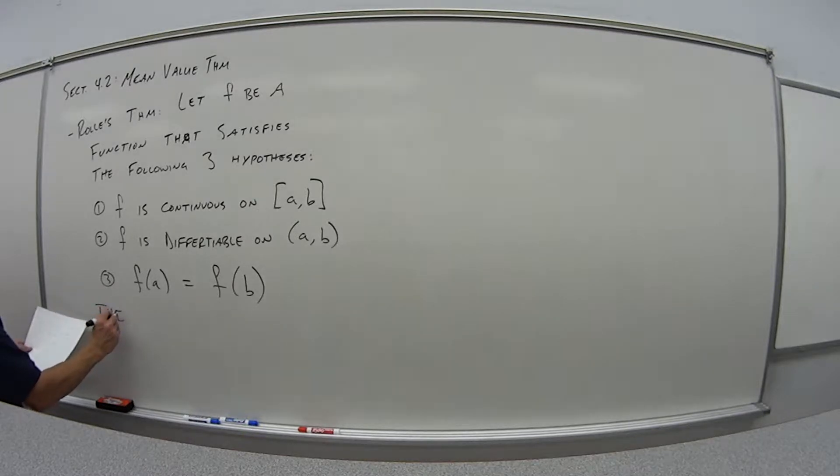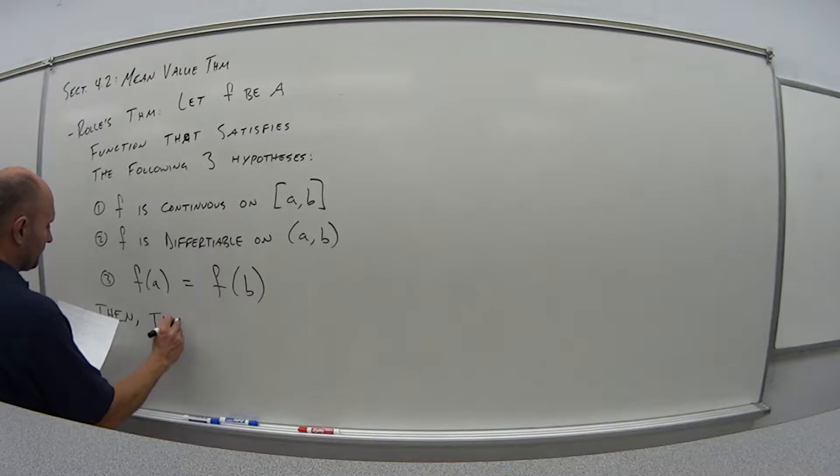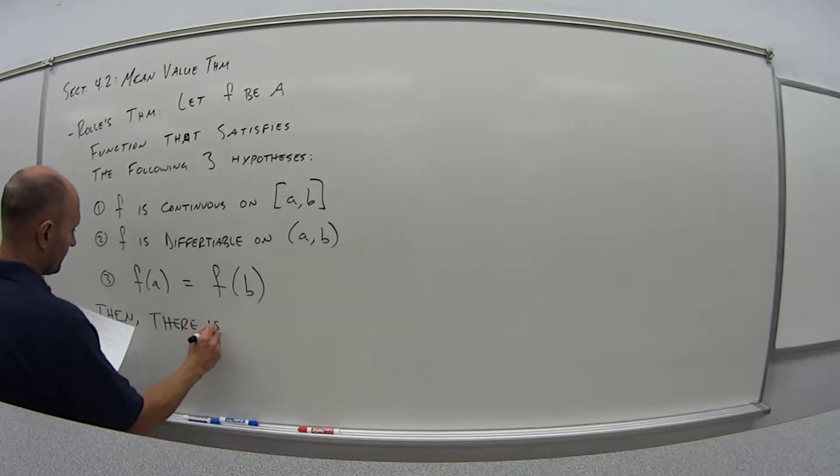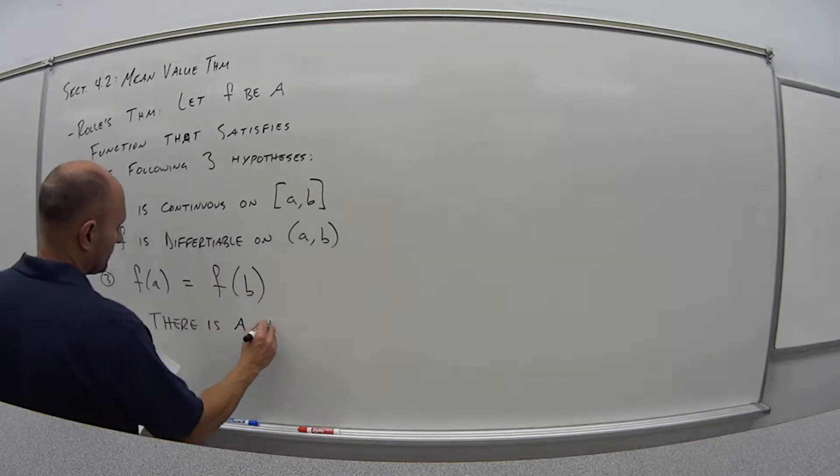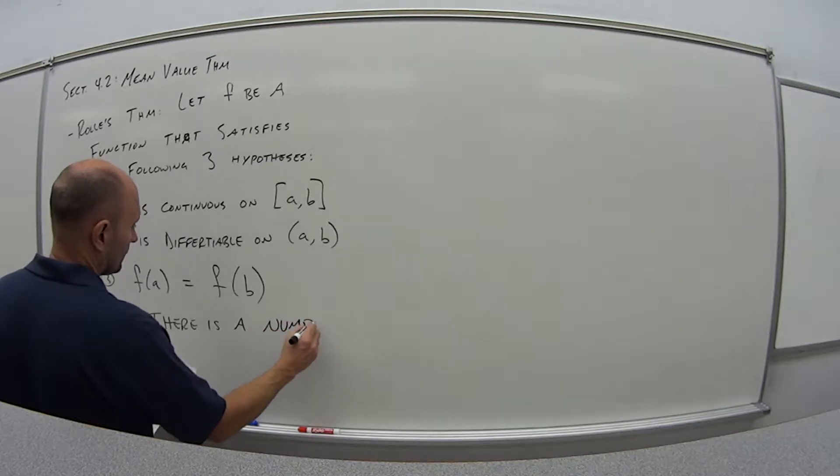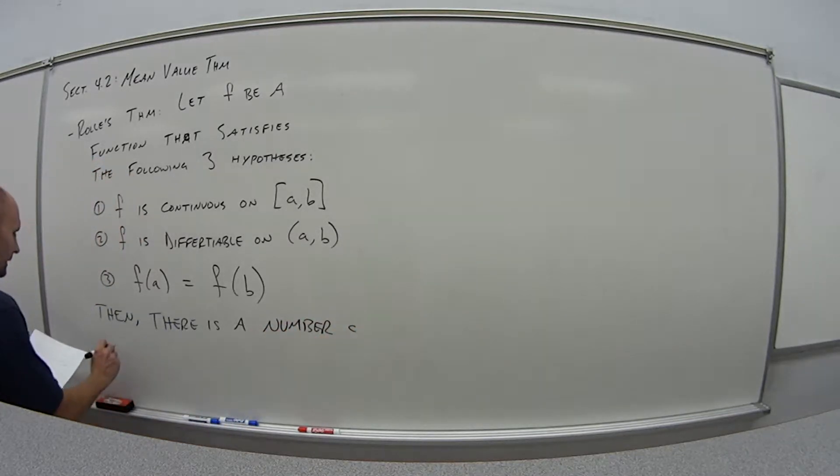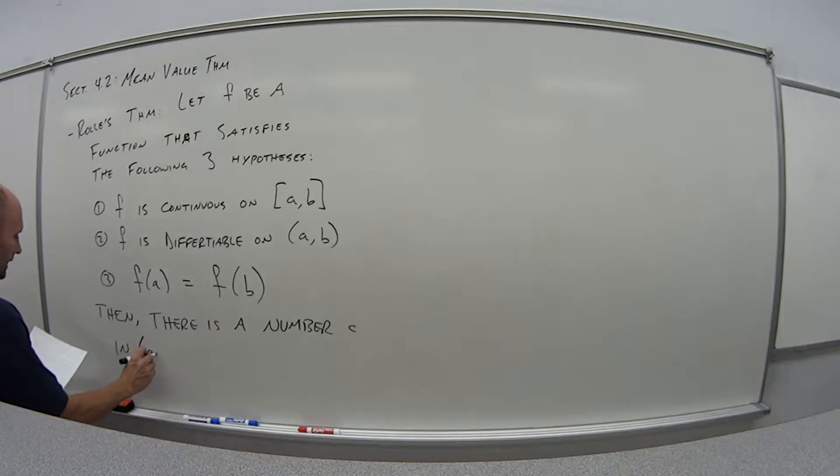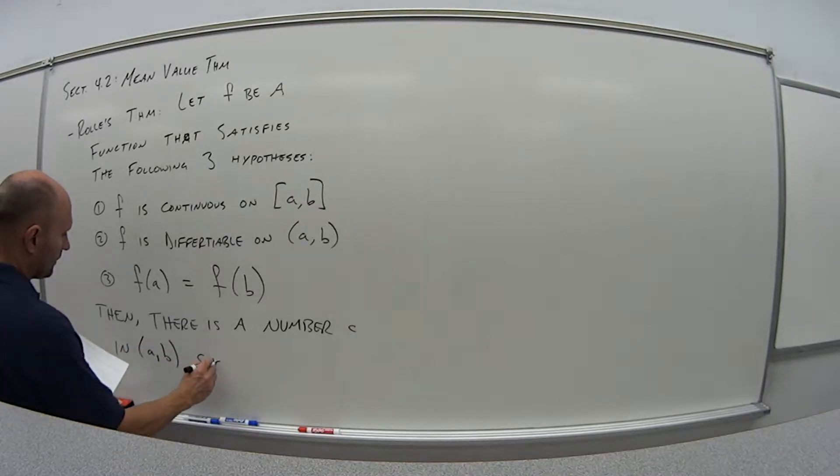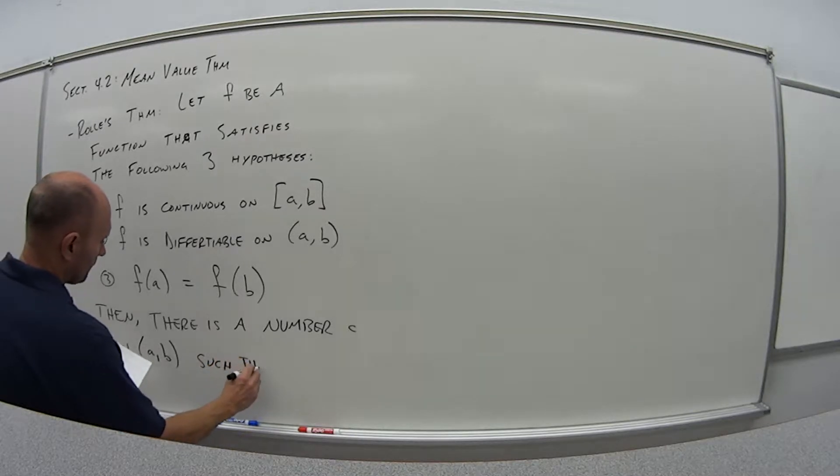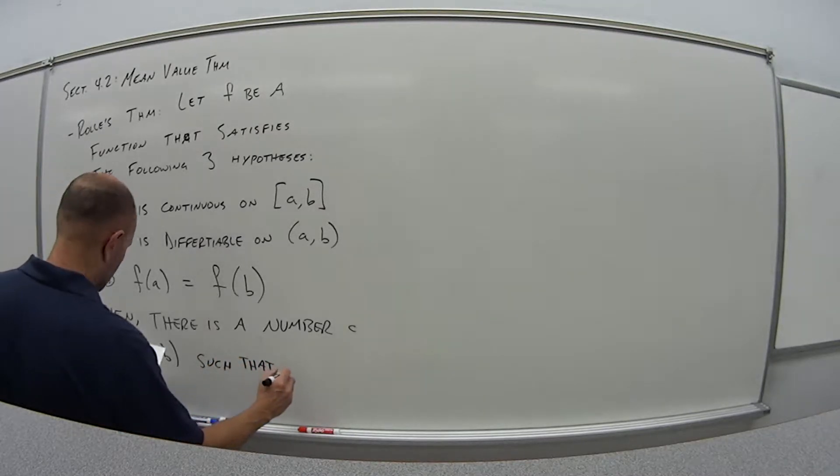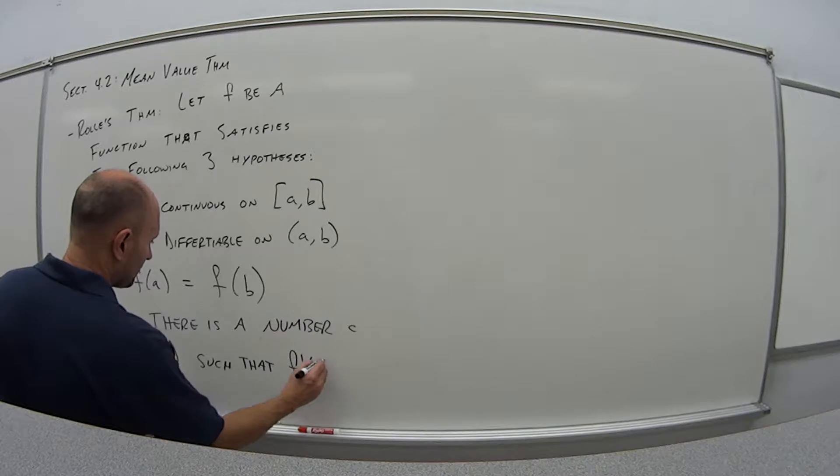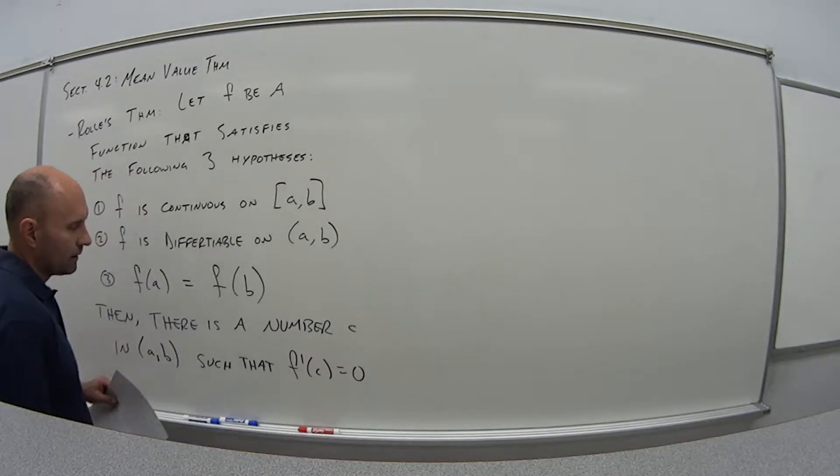If these three things happen, Rolle's theorem then says there is a number c in the open interval (a,b) such that f'(c) is equal to zero.